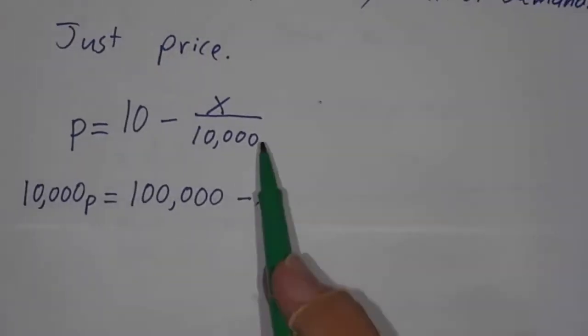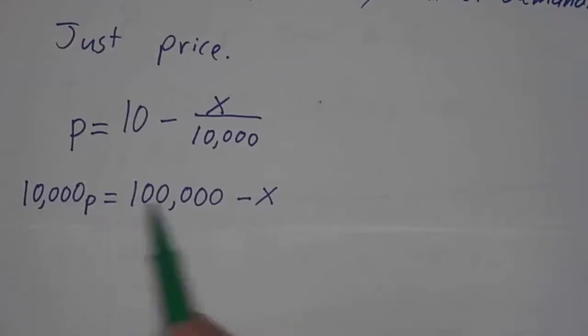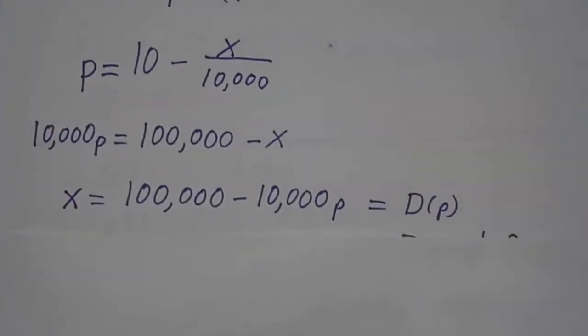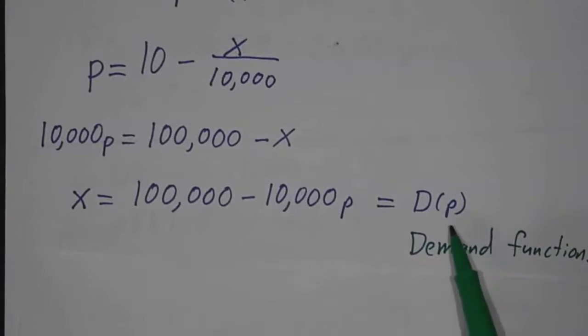The algebra is pretty simple. Just multiply by 10,000 and then put the x on the other side of the equation. We get that x is 100,000 minus 10,000p. And we call this the demand function. The demand function is how many orders you're going to get as a function of the price. And it's generally decreasing.